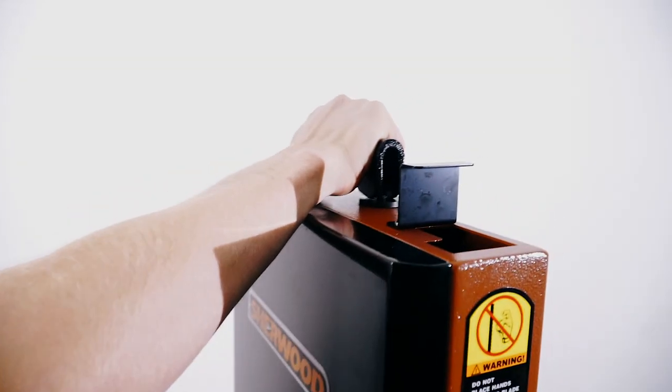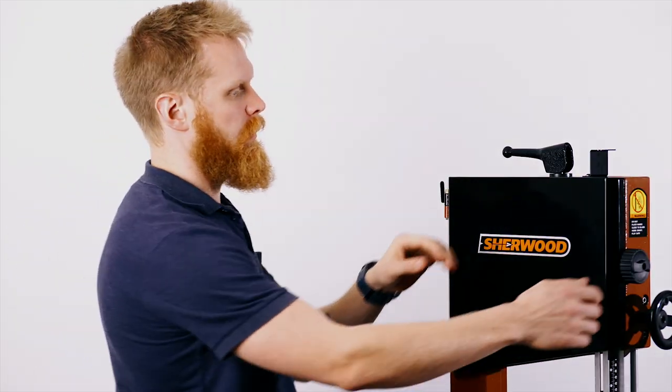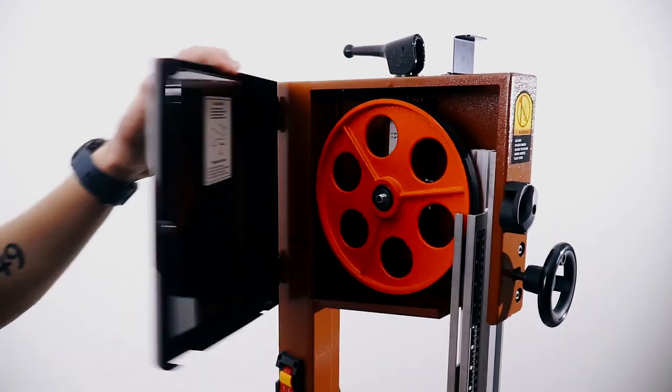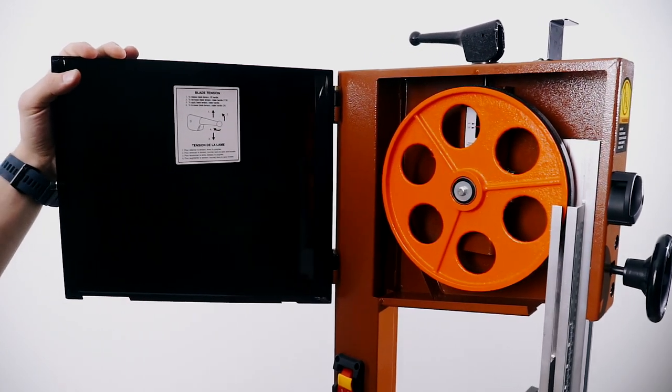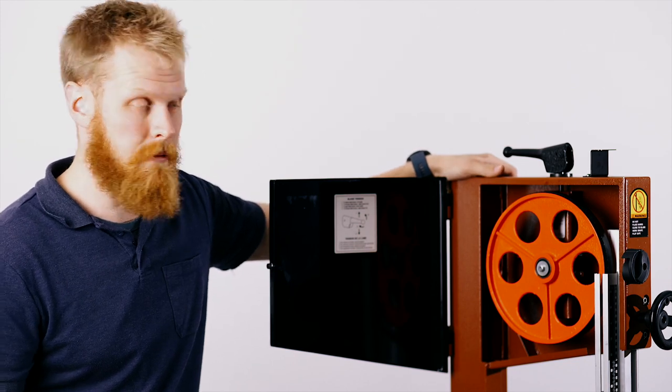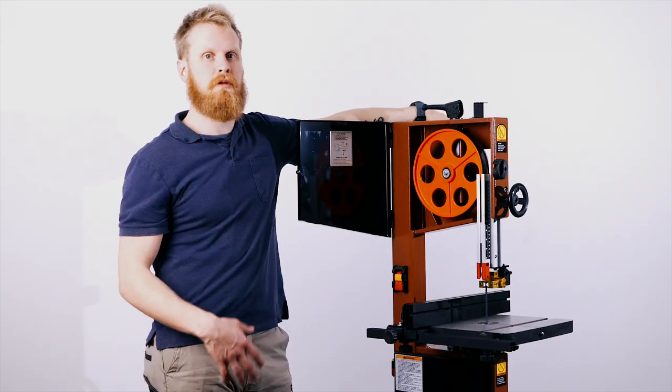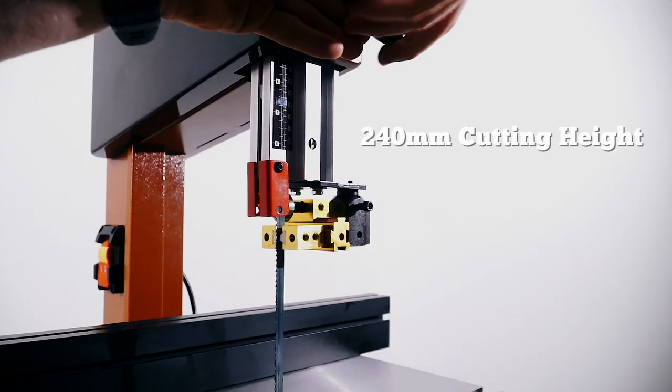Starting from top down, you've got your quick-release blade-change lever, which is much more handy than having to unwind it. You've got your 10-inch cast iron wheels, so that reduces vibration, allows your blade to spin much more freely. You've got the much more robust blade guard, which will give you up to 240 millimeters of cutting height, approximately.